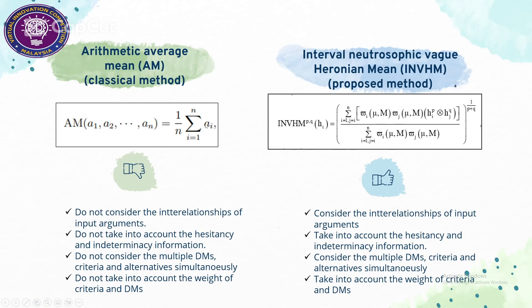This is our comparison between the classical method and our proposed study. In the classical method, it does not consider the interrelationship of input arguments, does not take into account hesitancy and indeterminacy, does not consider multiple decision makers, criteria and alternatives, and does not take into account the weight of criteria and decision makers. But in our proposed method, we consider the interrelationship, take into account the hesitancy and indeterminacy information, consider multiple decision makers, criteria and alternatives, and also take into account the weight of criteria and decision makers.